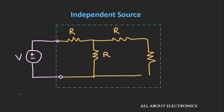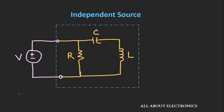Whether you connect this voltage source to a resistive circuit or to a circuit which contains a resistor, capacitor and inductor, its value does not change. Even if we double the values of these components, the value of this voltage source does not change. This is all about the independent sources.